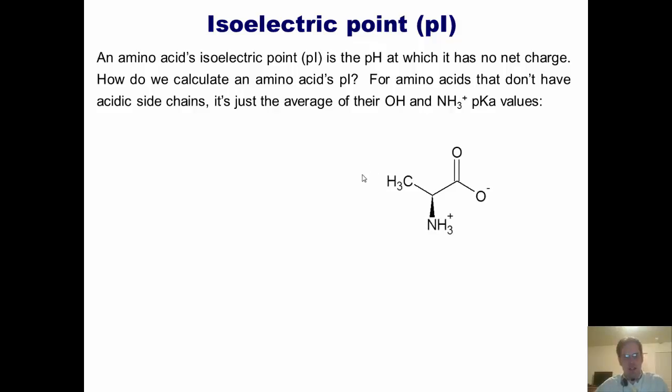Let's take a look at this example. If we look at alanine, this amino acid right here in the form shown, we can see that it has a negative charge on the oxygen and a positive charge on the nitrogen. What's its net charge? Zero, of course, because plus one and minus one cancel each other out. That's what I'm talking about when I say that an amino acid's isoelectric point is the pH at which it has no net charge.